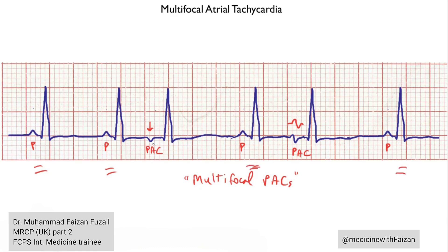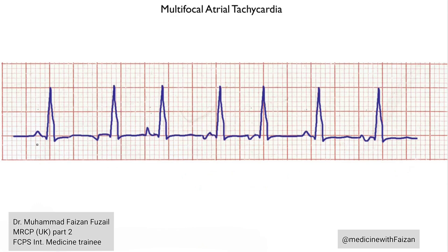What does MAT look like? You have some p-waves going up, some going down, some that look tall, and some that are biphasic. There is not one single p-wave morphology that predominates, so you don't have sinus rhythm with multifocal APCs — what you have is multifocal atrial tachycardia, or MAT.